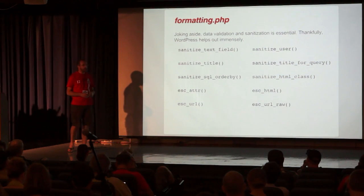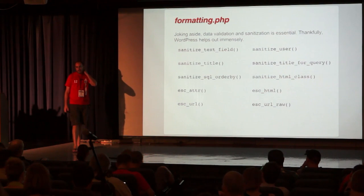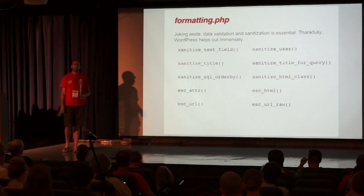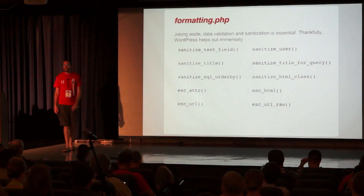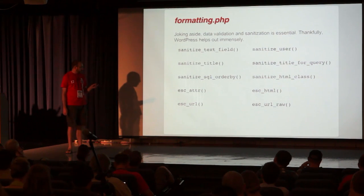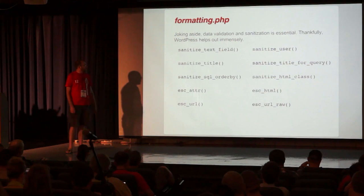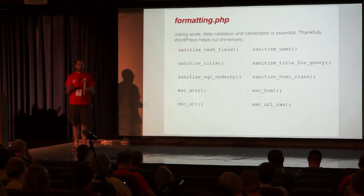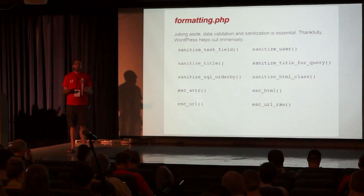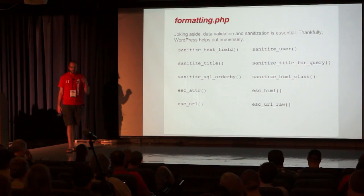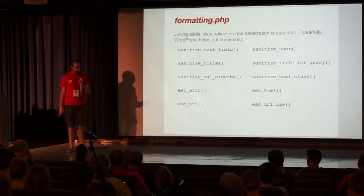These sanitize functions are generally intended for when you're saving data into the database. The flip side — when you now have this data and want to output it — there are the escaping functions listed here. What this does is make sure the data is the expected type. So esc_attr — if you're putting that subtitle into an HTML attribute on a link. You've taken that CSS class you sanitized using sanitize_html_class, and you now actually want to output that on something so the color they chose actually shows up — that's esc_attr.